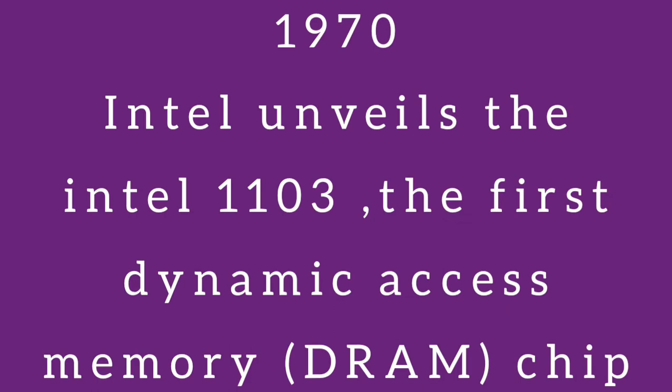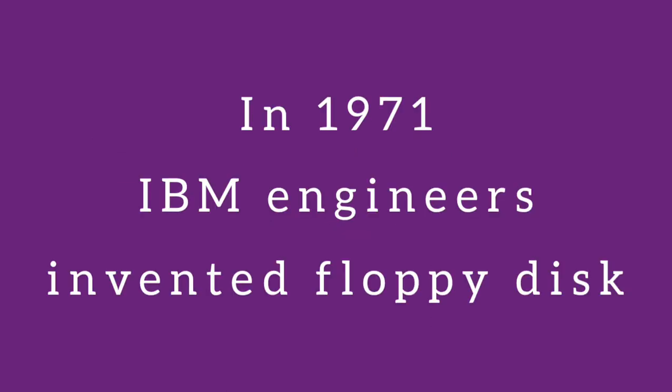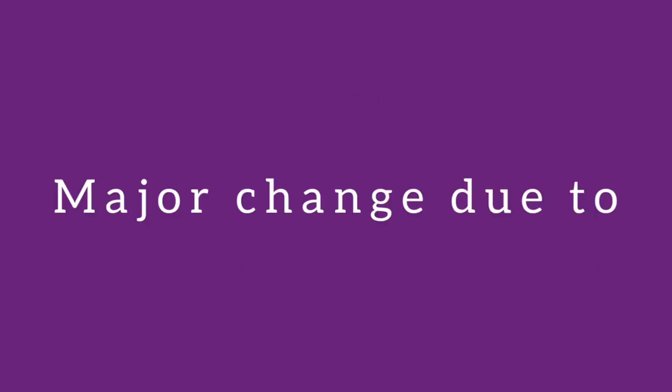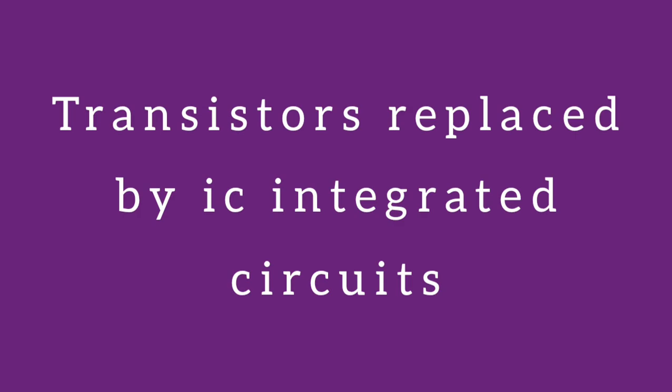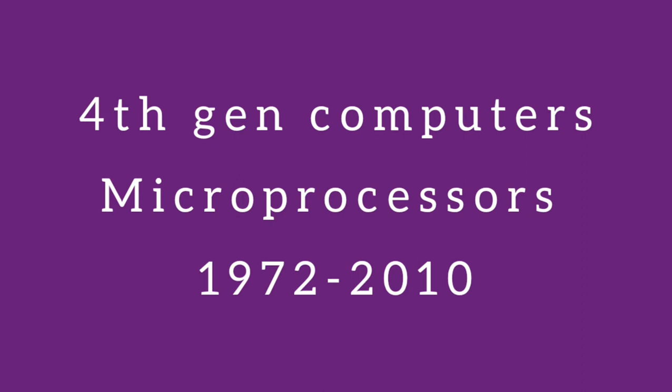In 1970, newly formed Intel introduced RAM — the first dynamic random-access memory, or DRAM. In 1971, the floppy disk was introduced for storage. In the third generation, transistors were replaced by integrated circuits, or ICs. By 1972, this transition marked a major leap forward in computer miniaturization.